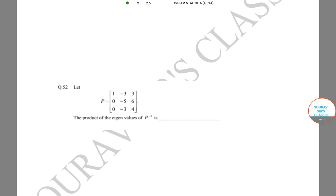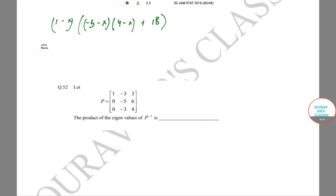Firstly, let us find the eigenvalues of P. So the characteristic polynomial is (1 - X)(−5 − X)(4 − X) + 18, which equals the determinant of P minus lambda X I.